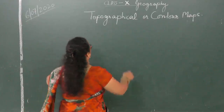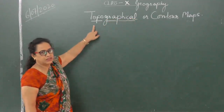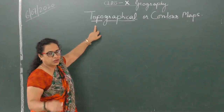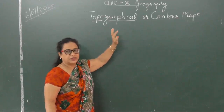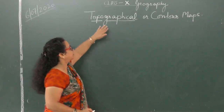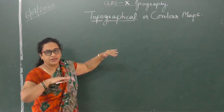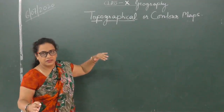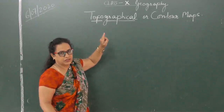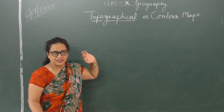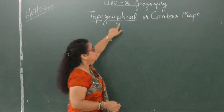The word 'topographical' is a combination of 'topo' and 'graphical'. Topos means the face or surface of the earth, and graphical means presentation or description in detail. So when you combine the two words, it means a map which is like a picture of the earth surface — everything on the earth surface it depicts. Topos is the earth surface and graphical is like a picture presentation — a very accurate presentation showing everything on the earth surface.